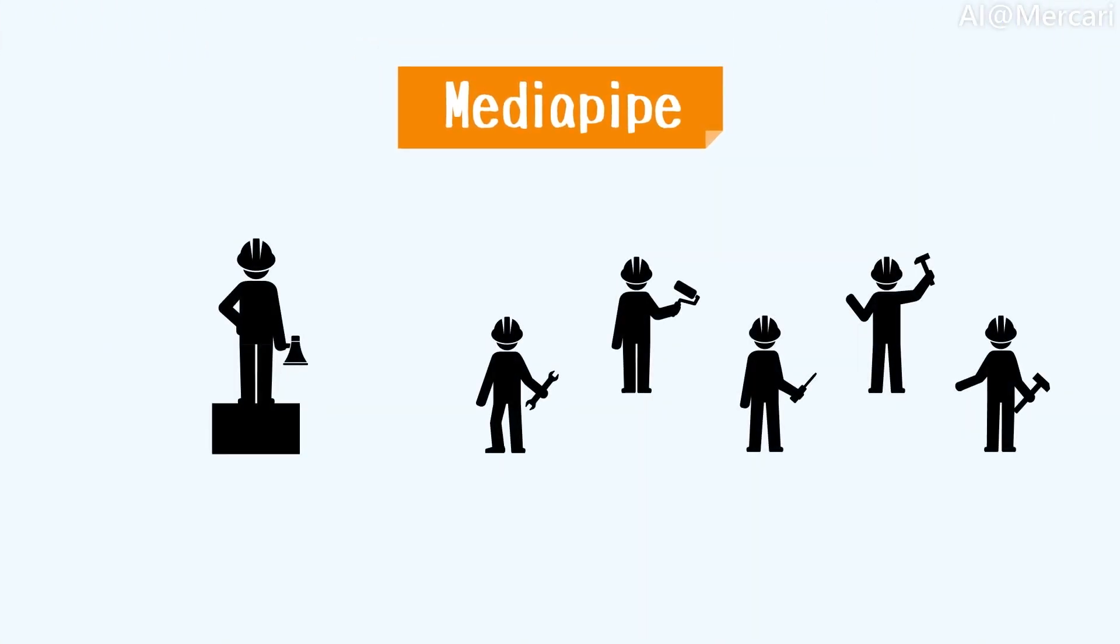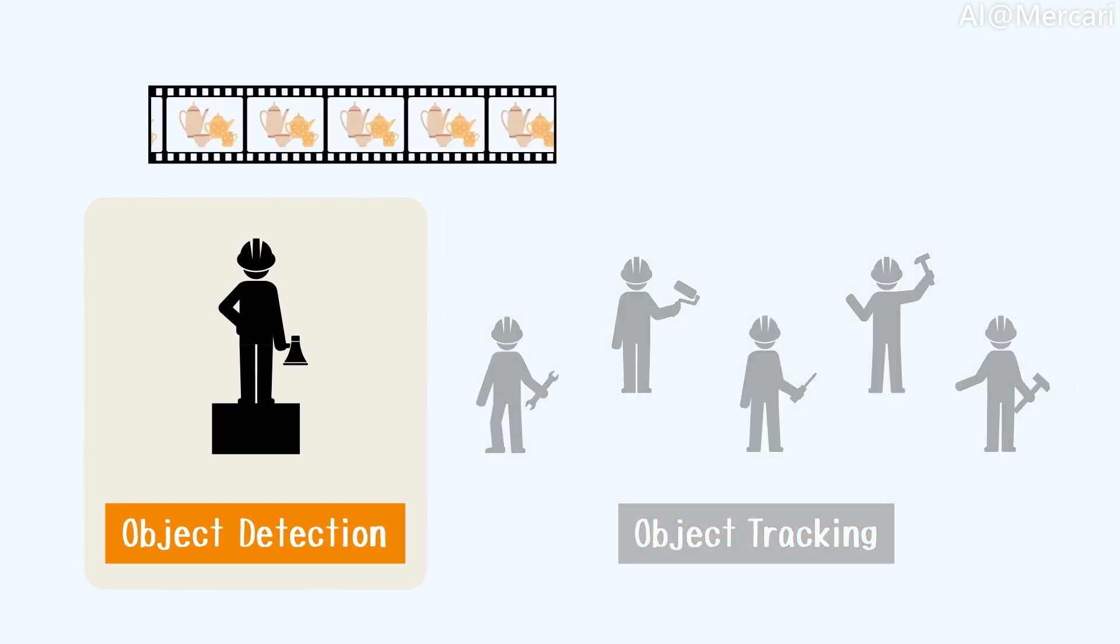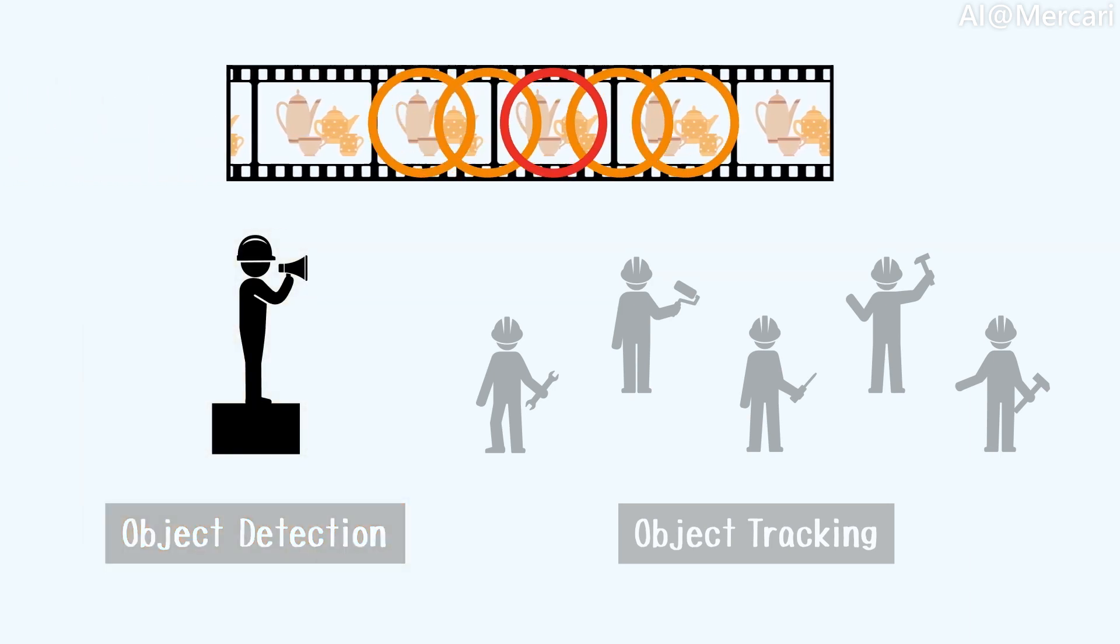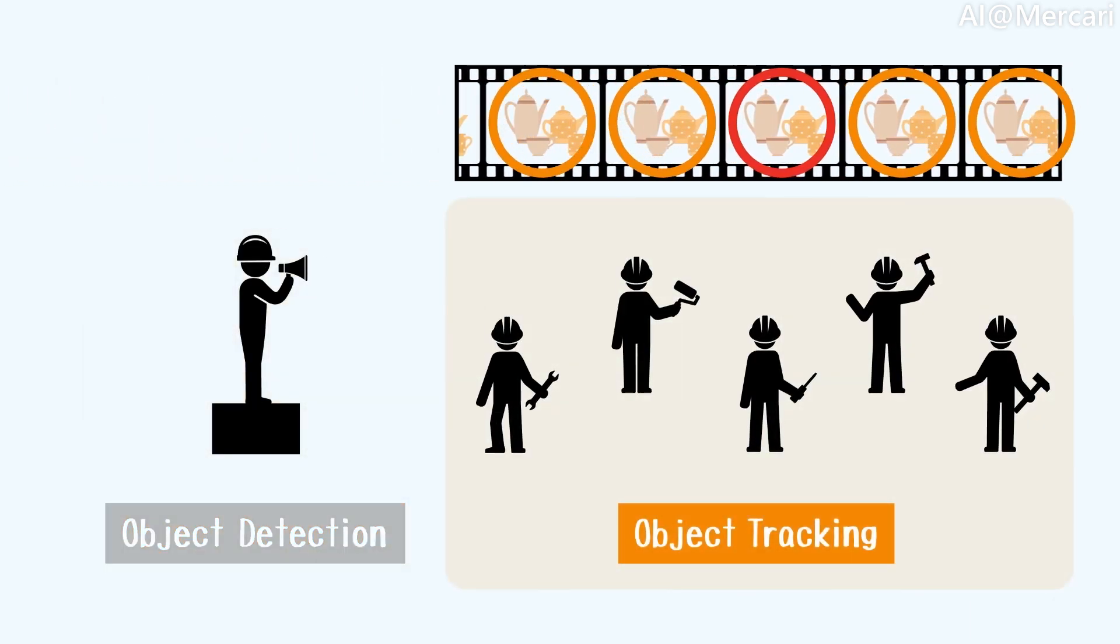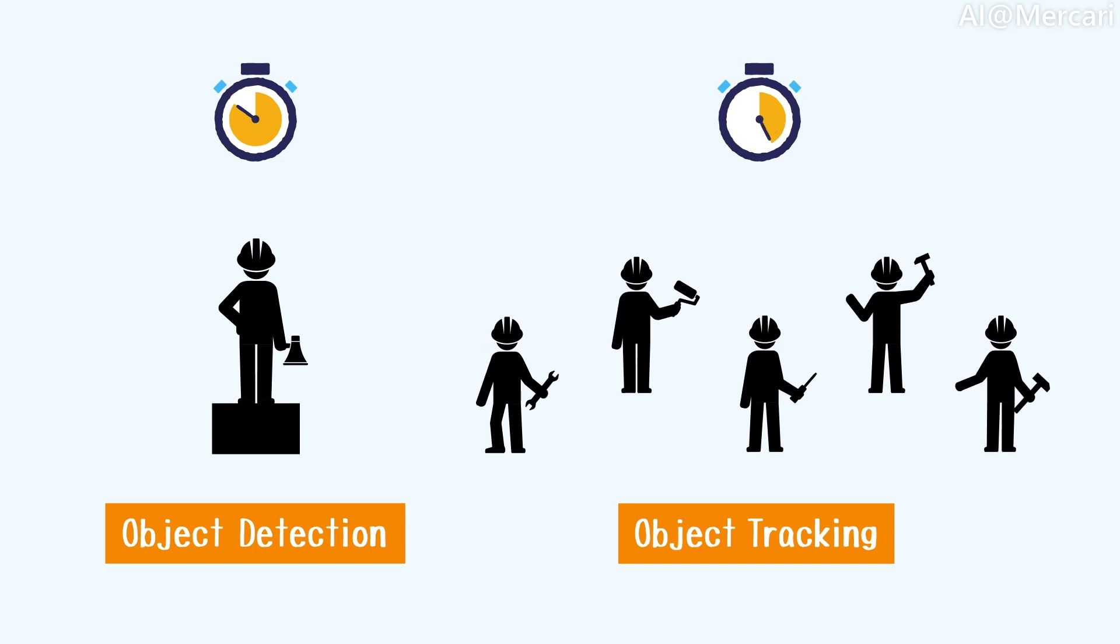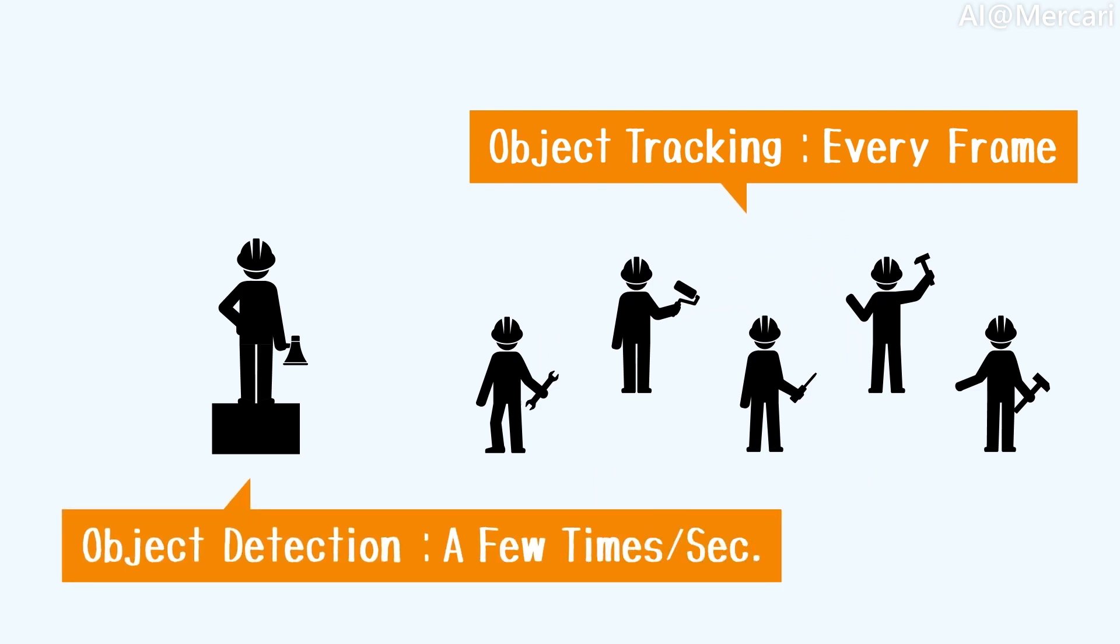By using MediaPipe, we separated the process of object detection and object tracking. Object detection is the process of identifying a unique object from an image, while object tracking is the process of tracking the same object through multiple frames of an image. While object detection takes up a significant amount of time to process, object tracking is relatively faster to perform. Therefore, in our case, we can apply object tracking to every frame and apply object detection for only a few times per second.